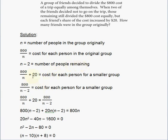800 divided by N plus 20 represents the cost for each person for the smaller group, because the problem says each friend's share of the cost increased by $20 after the two friends decided not to go on the trip. So 800 over N, the original cost per person, plus 20 gives the new cost per person.